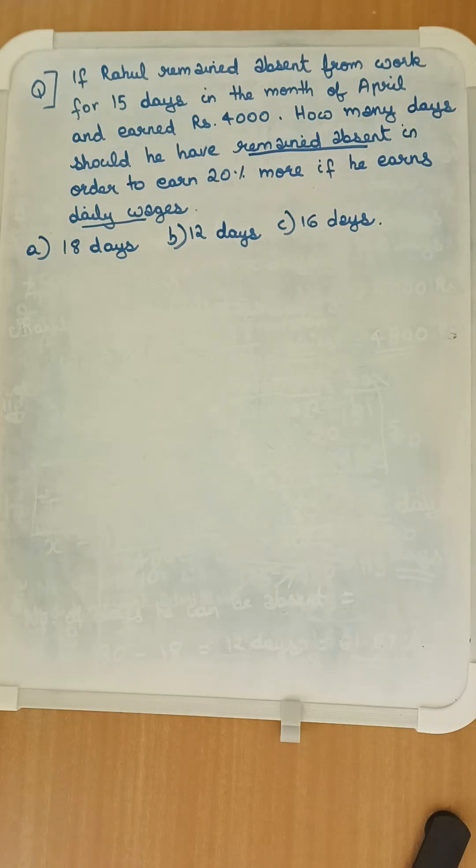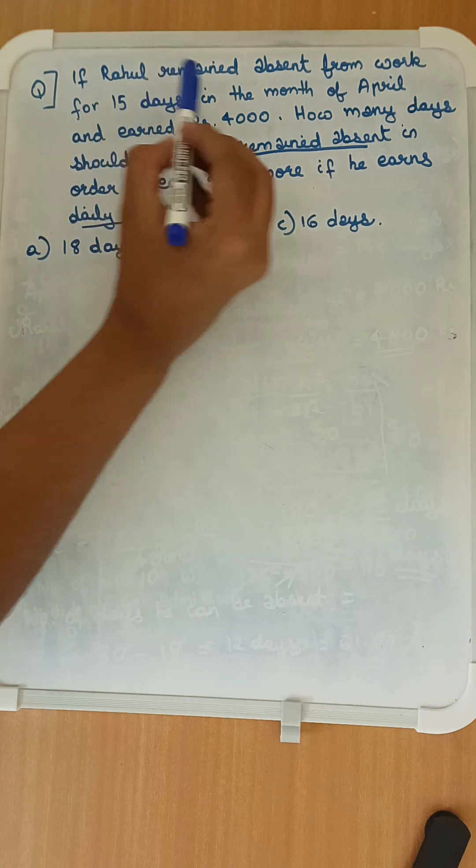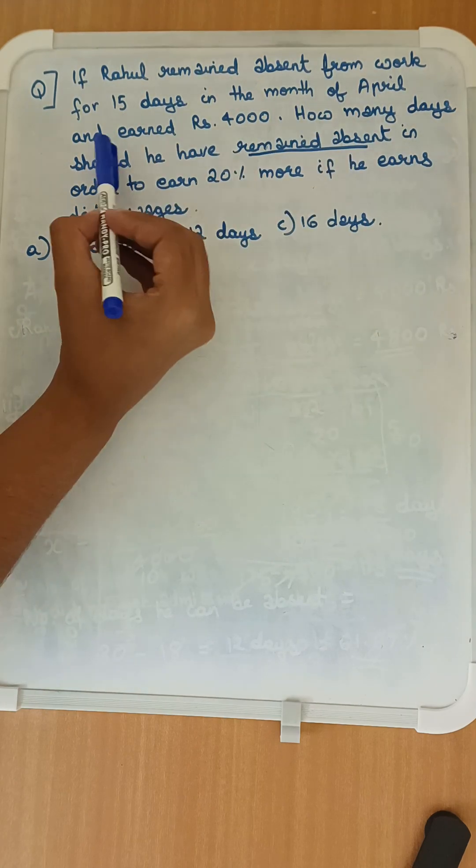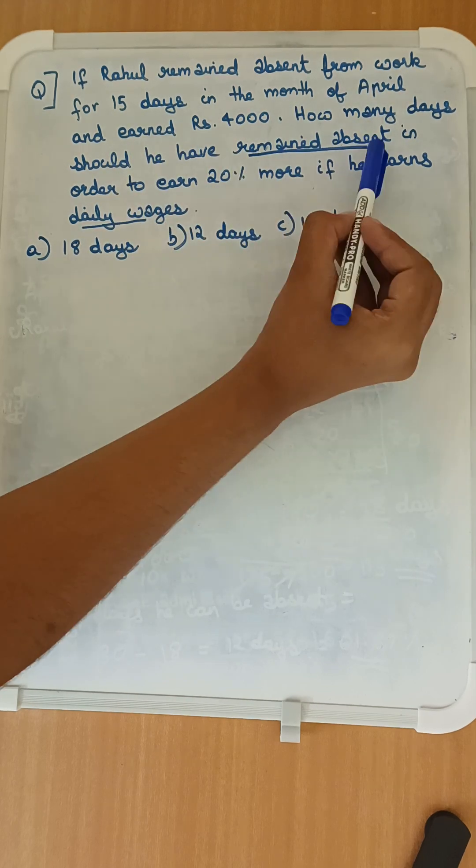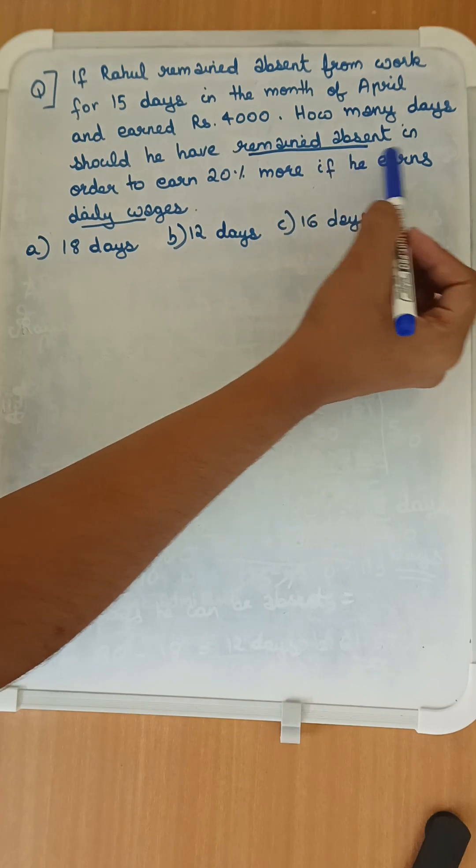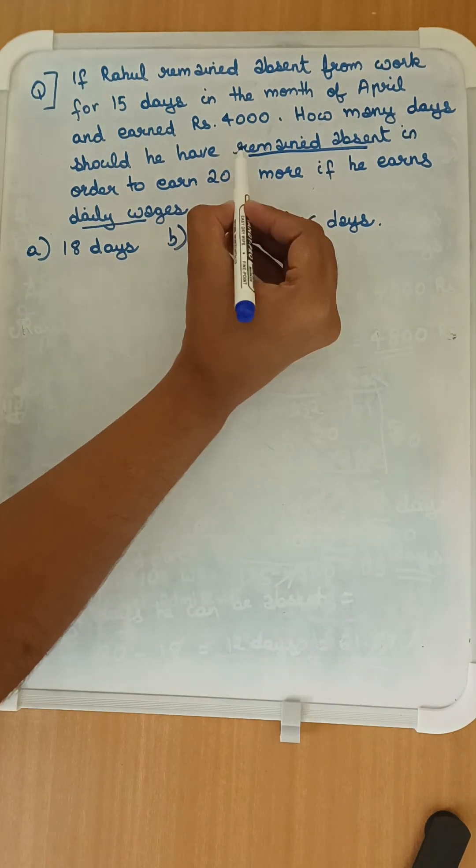Hi everyone, today let's solve a question based on proportions. The question is: if Rahul remained absent from work for 15 days in the month of April and earned Rs 4,000, how many days should he have remained absent in order to earn 20% more if he earns daily wages? In this question we have to remember they have asked about remaining absent and daily wages.